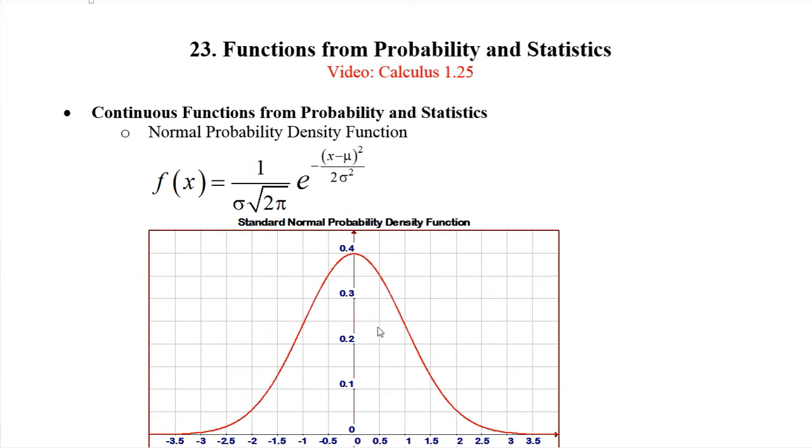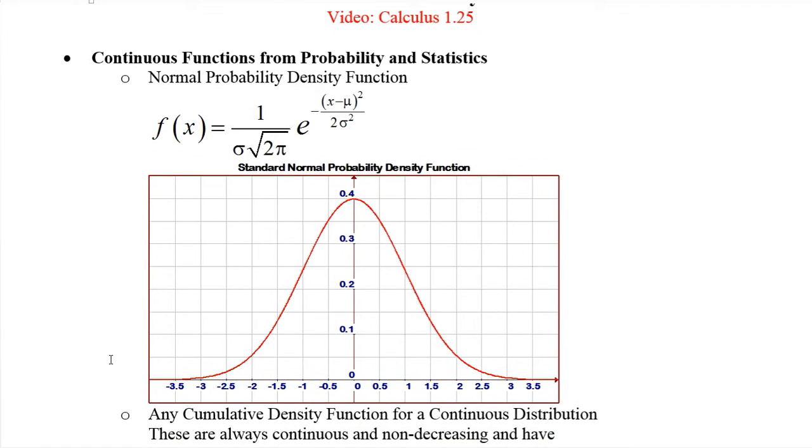In probability theory, areas under this PDF between it and the x-axis are probabilities, and the sum of all probabilities has to be one. So the total area between this curve and the x-axis is actually just one. That's actually not a super easy thing to prove. That's actually a really good project for a calculus three class.